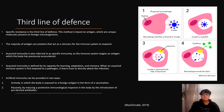Artificial immunity can be provided in two ways: actively, in which the body is exposed to a foreign antigen in the form of vaccination; and passively, by inducing a protective immunological response to the body.